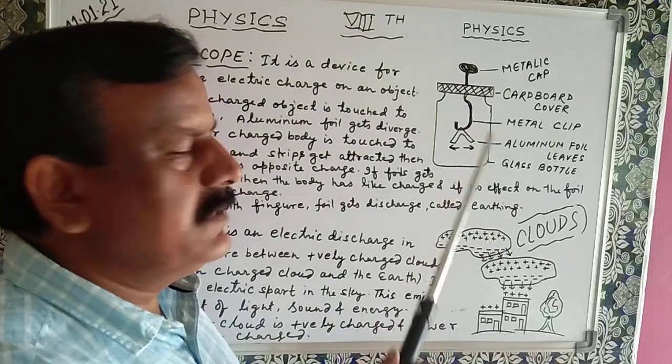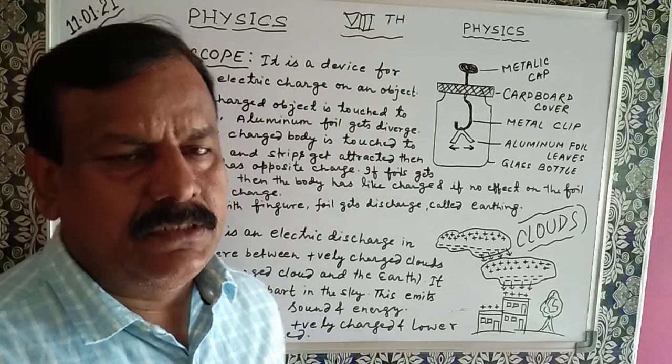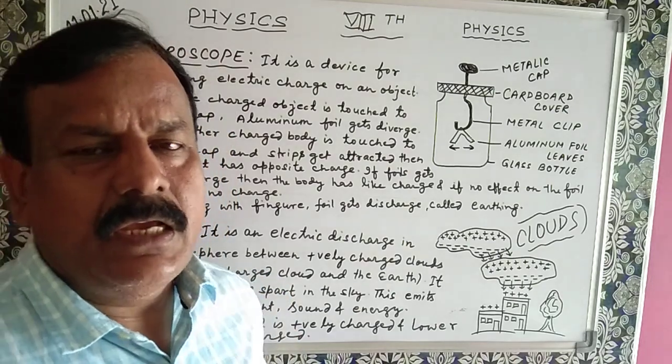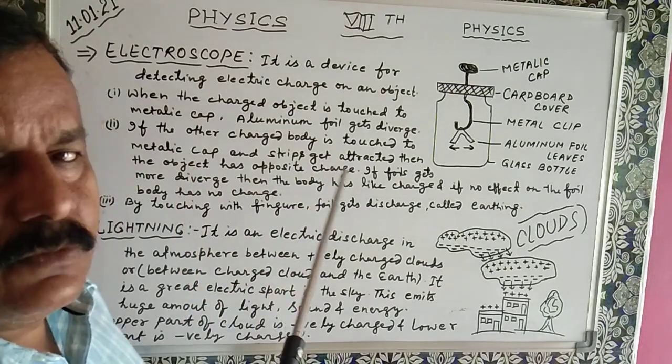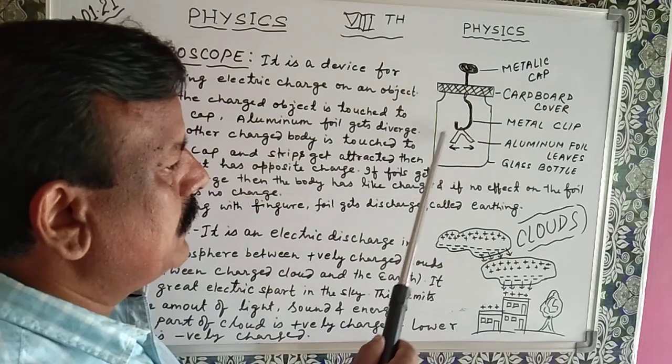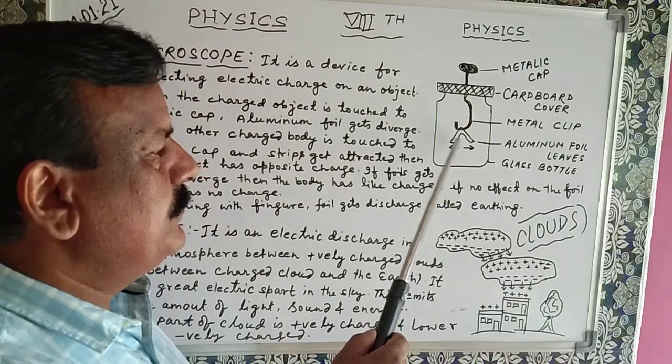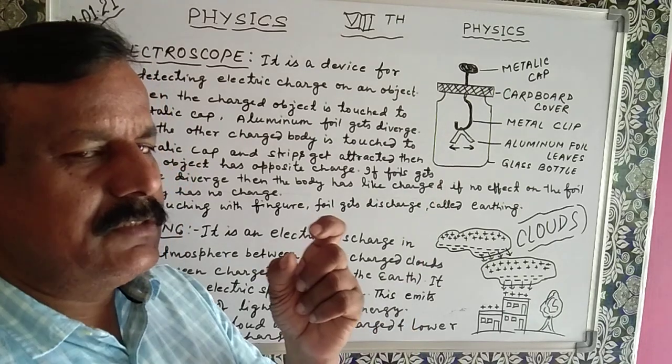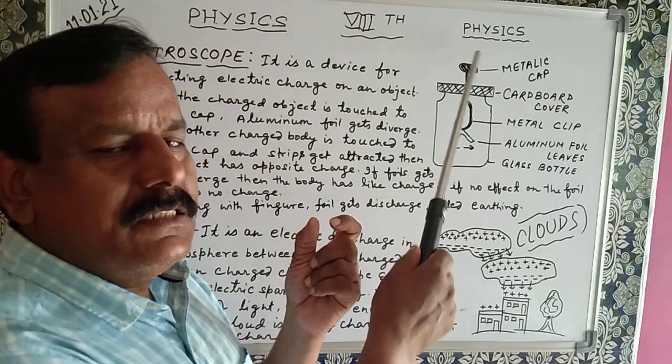So now we will take the object that charge we have to detect. If the other charged body is touched to the metal cap, we will observe what happens here in the aluminium foil. If it comes close, if the leaves come close, then the object is having opposite charge.